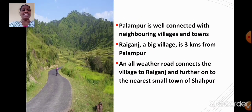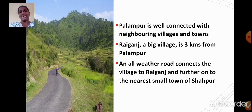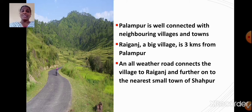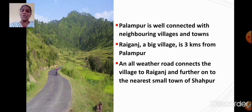Palampur is well connected with neighboring villages and towns. Raiganj, a big village, is 3 kilometers from Palampur. An all-weather road connects the village to Raiganj and further on to the nearest small town of Shahapur.